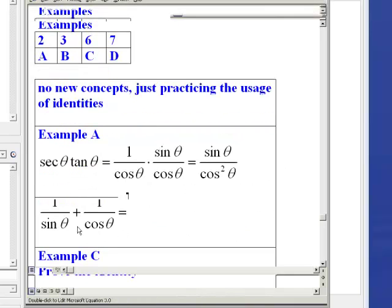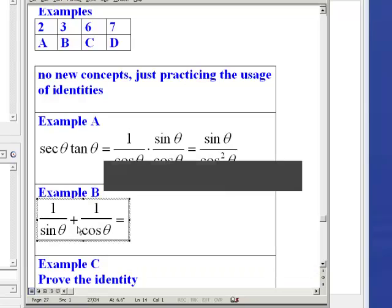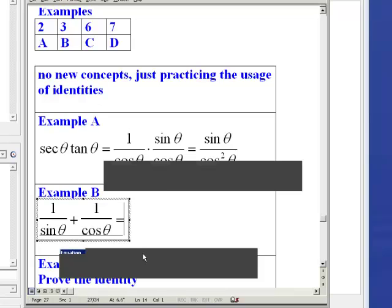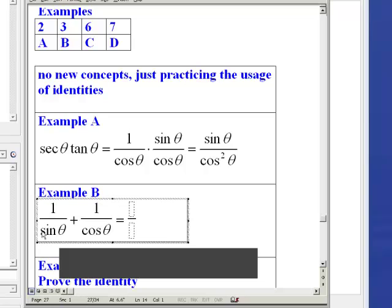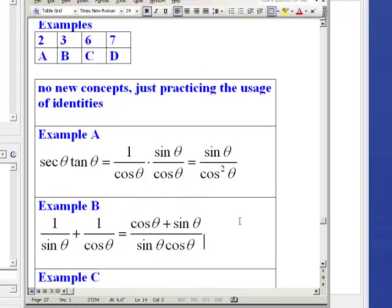Next example says to add one over sine plus one over cosine. That means we need a common denominator. That's obviously going to be sine times cosine. And that means in the process we're going to get cosine plus sine in the numerator. So very straightforward. And that's actually it.